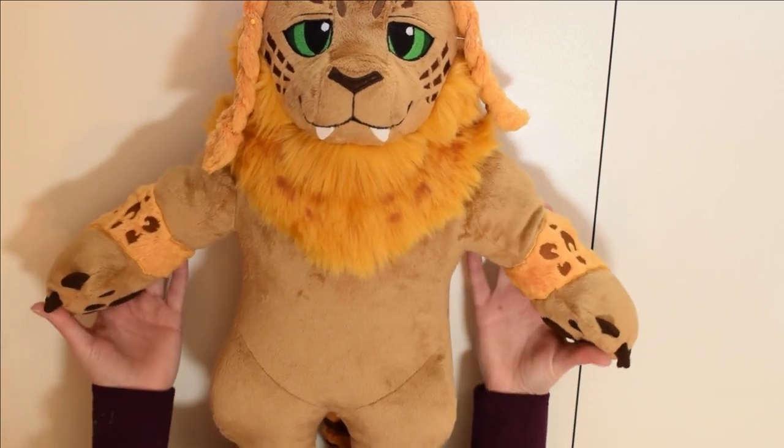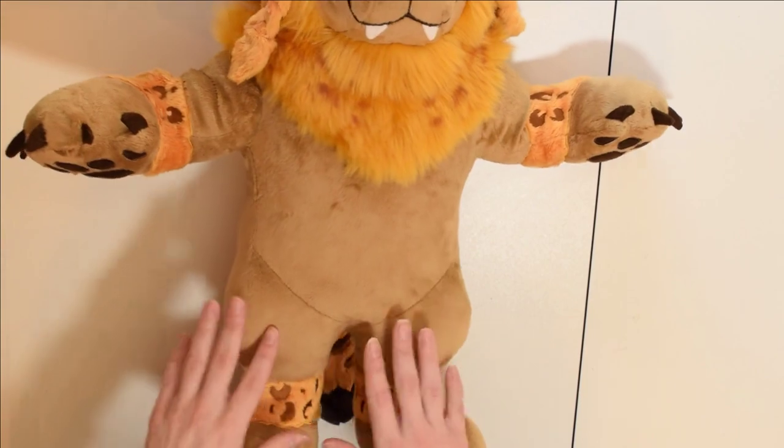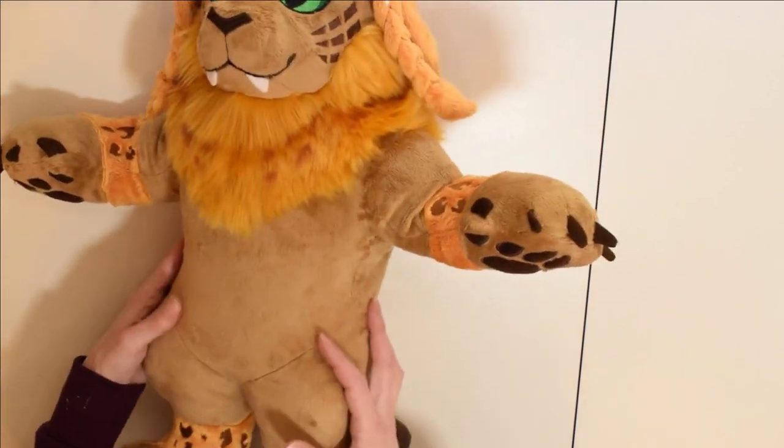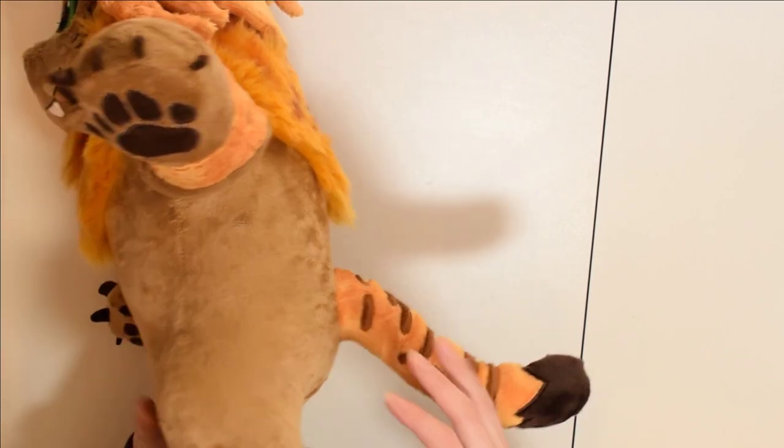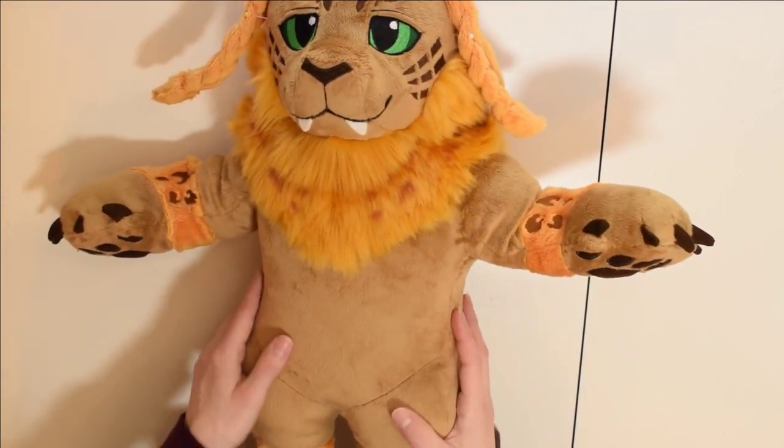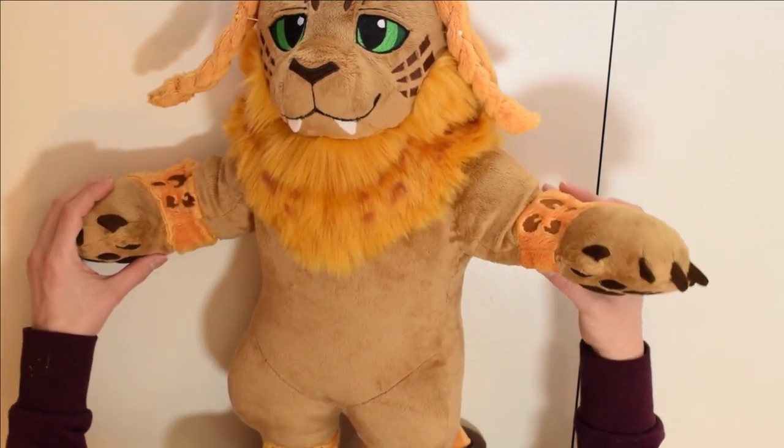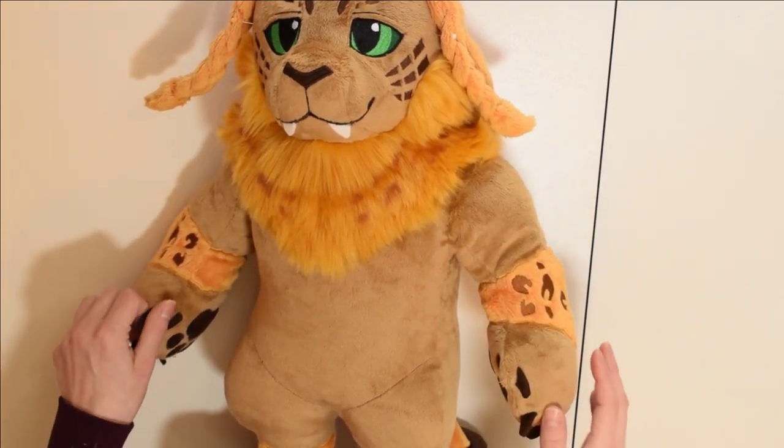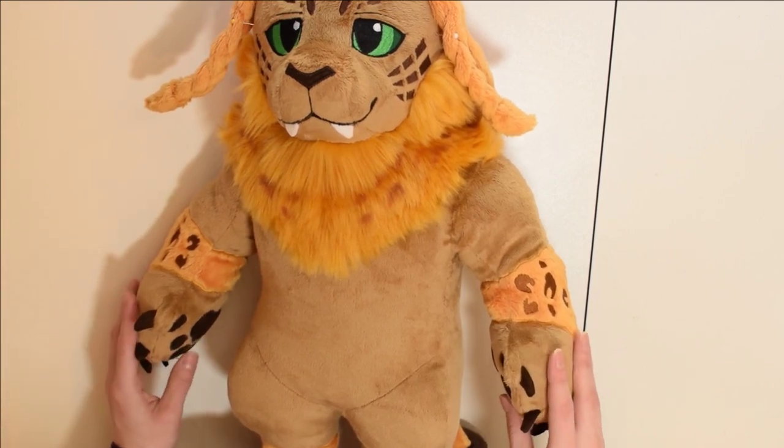This is specifically for making things like your arms poseable. You could also put them in the legs so they could sit down. You could do that for a tail if you wanted to make the tail poseable. Wings is also another common one because if you add some type of wire or armature to wings, you can make them poseable. But on top of that, it would also provide some stability to the wing itself.